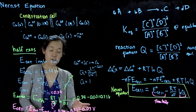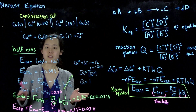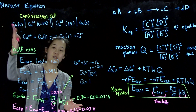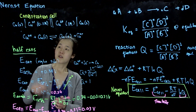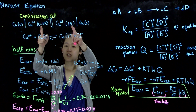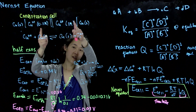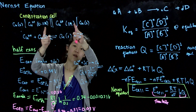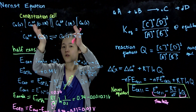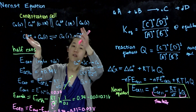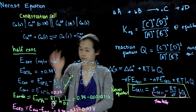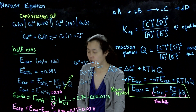That's how we calculate the cell potential for a concentration cell under non-standard conditions. By having a difference in concentrations between the two sides of our cell, we can still generate an overall voltage that drives current. This is the half-reaction method.